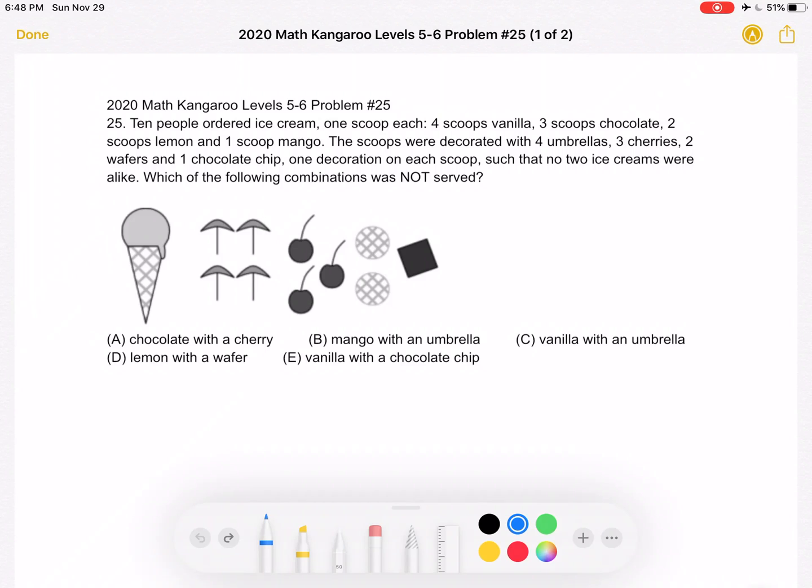This is the 2020 Math Kangaroo levels 5-6 problem number 25. Ten people ordered ice cream, one scoop each: four scoops vanilla, three scoops chocolate, two scoops lemon, and one scoop mango. The scoops were decorated with four umbrellas, three cherries, two wafers, and one chocolate chip.